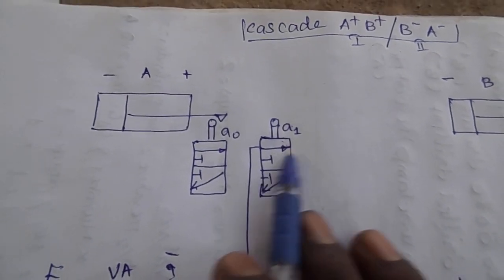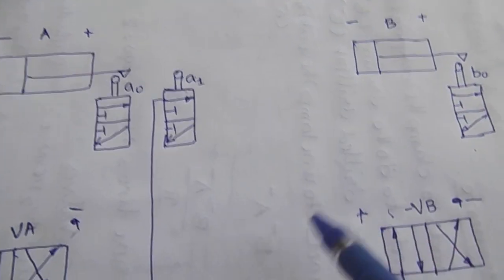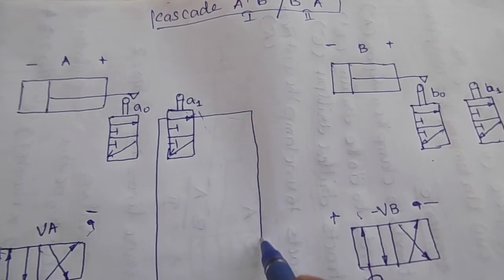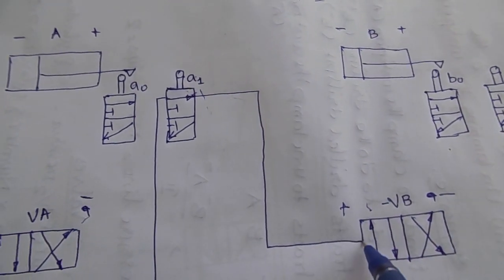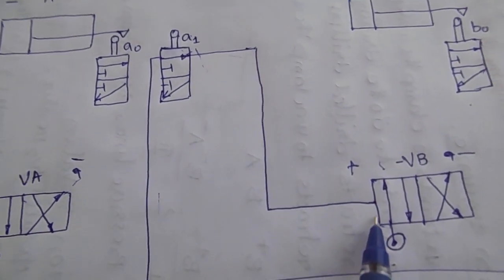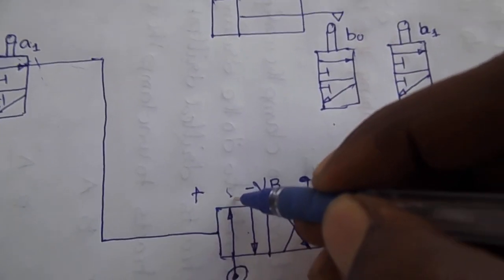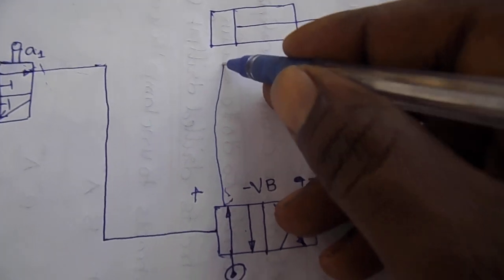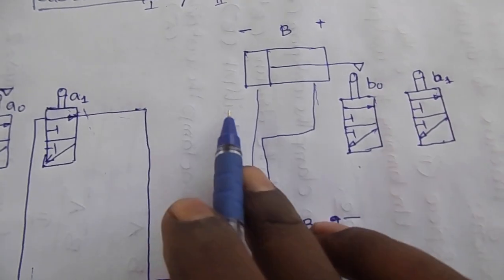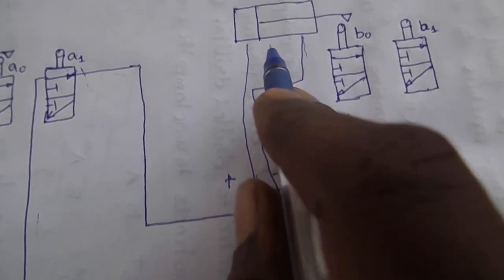If we get A plus extension, the pressure is coming from B plus. We connect the line here. If we get A plus extension, the pressure is coming from A plus and B plus — here we connect the line here. When the extension is coming from A plus and B plus, the pressure is left with B plus extension. This is the exact line.